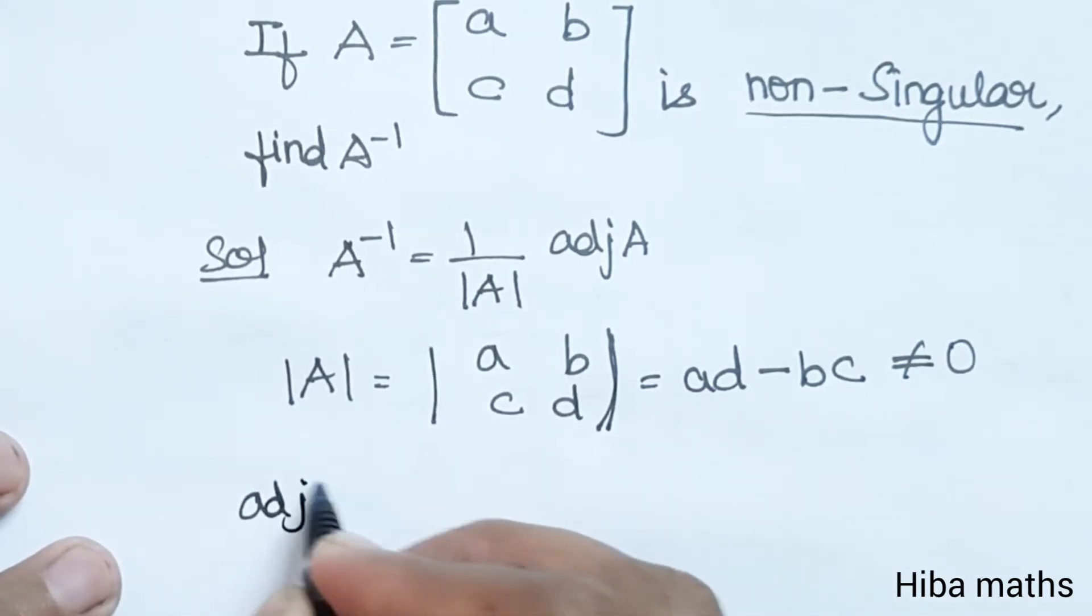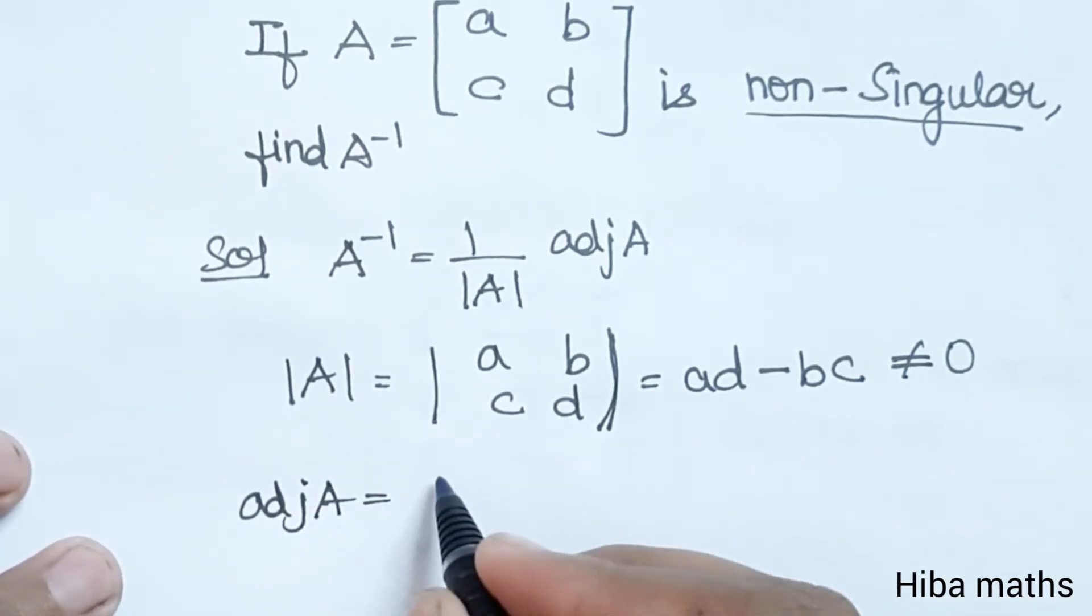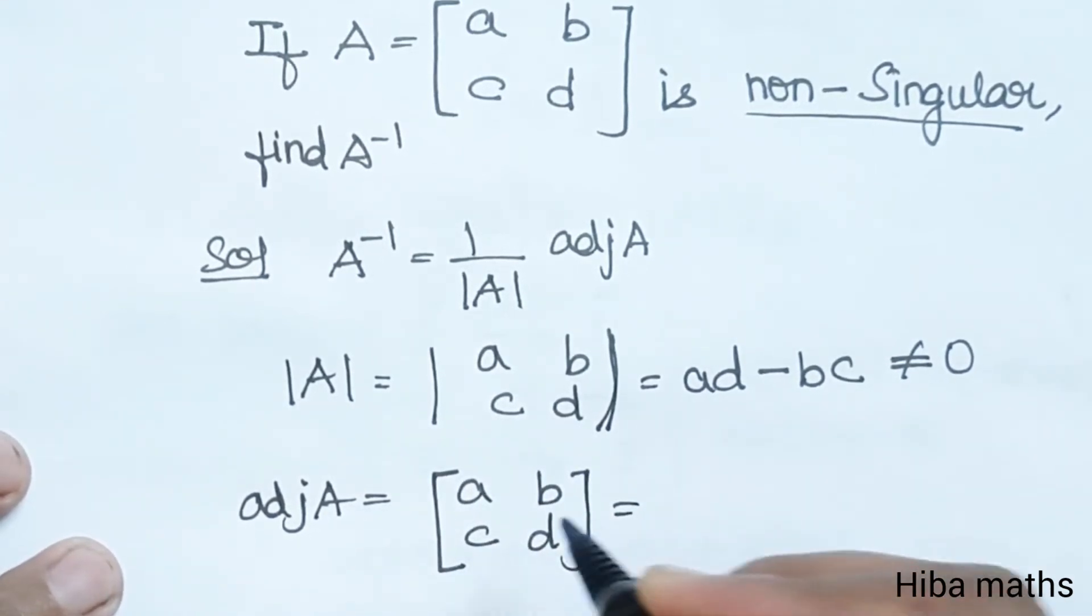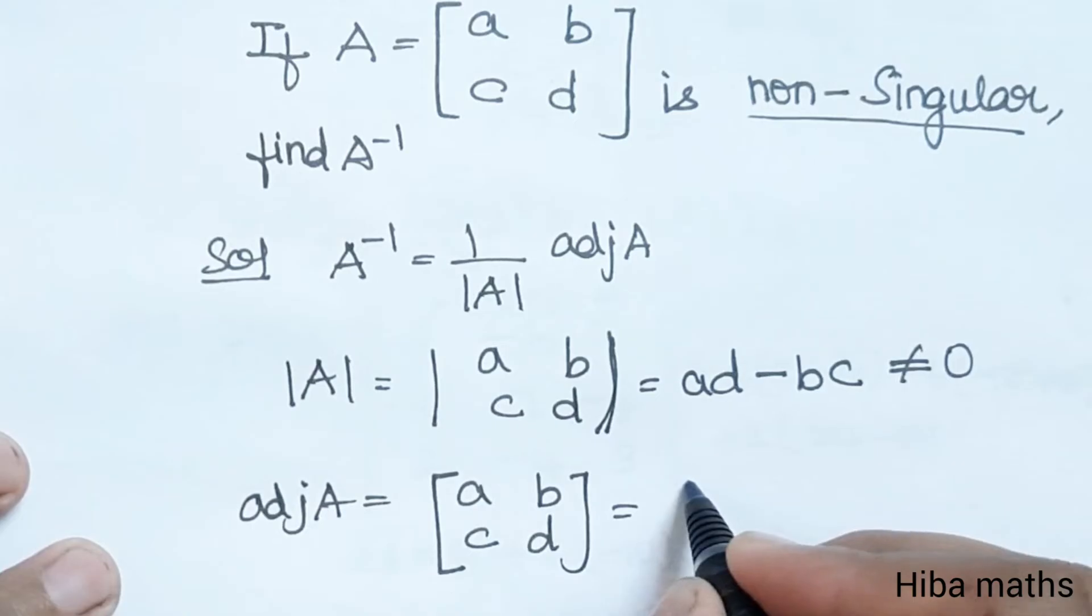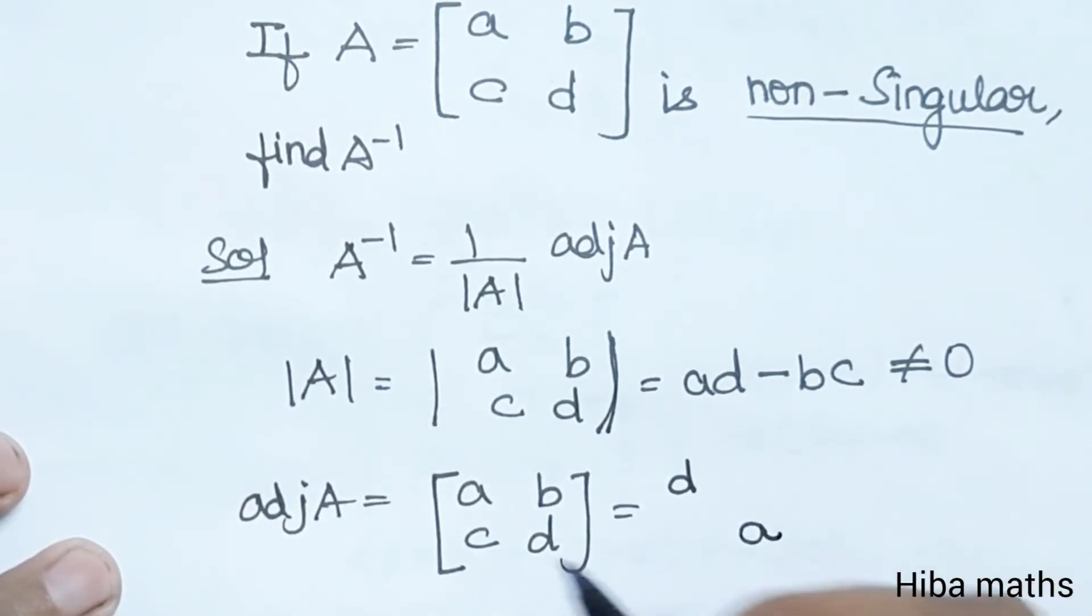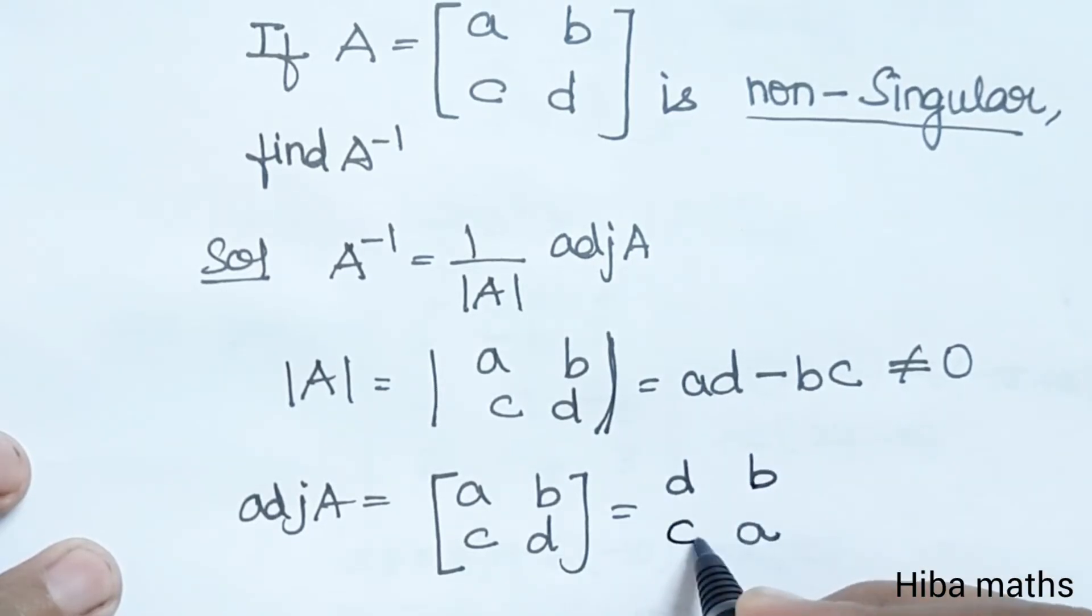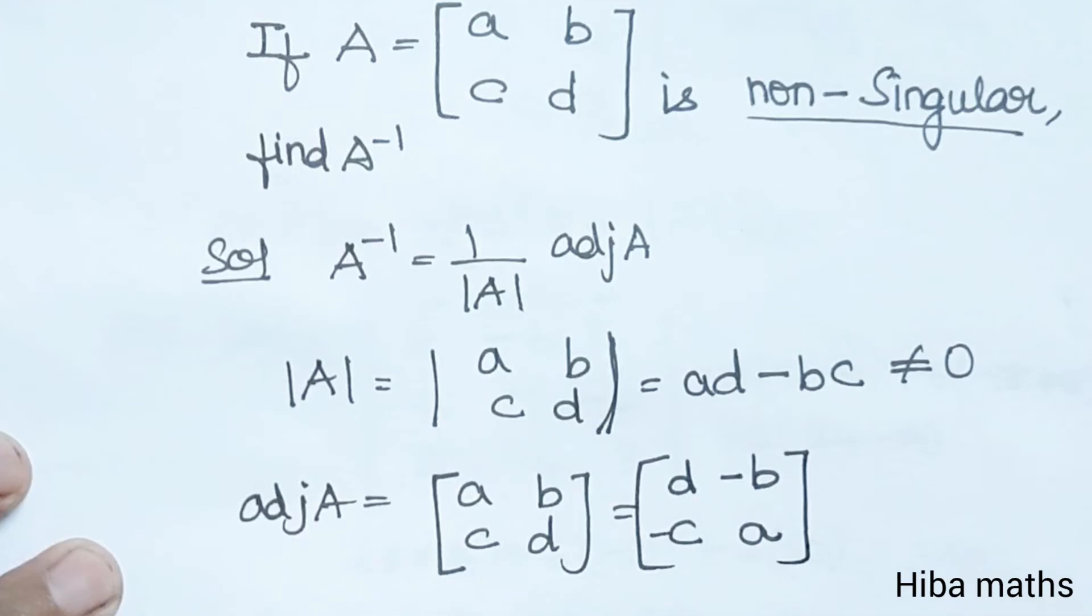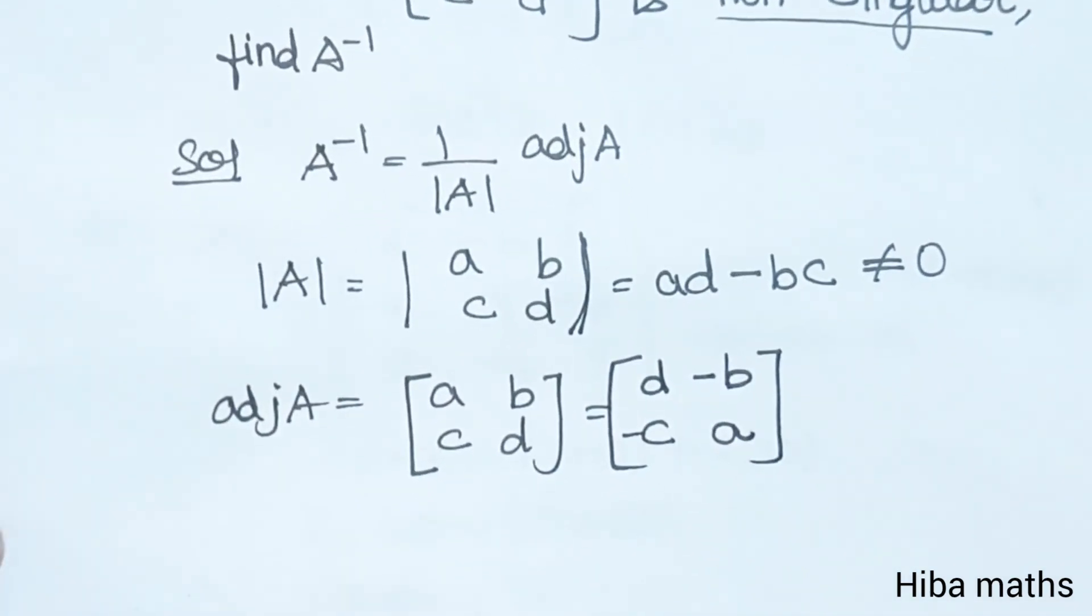Now for the adjoint of A. For a 2 by 2 matrix, this is a very simple method. The first diagonal is d, a. The second diagonal changes signs to minus b, minus c. Very simple. A 3 by 3 matrix is a little lengthy, but this is very easy.